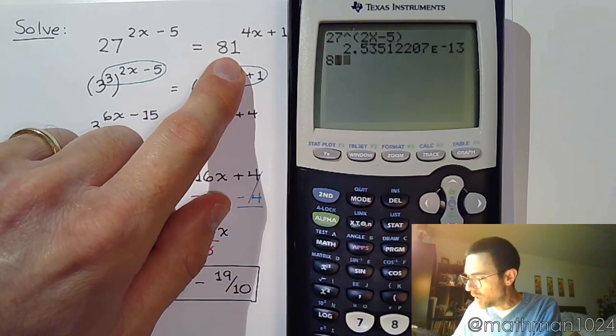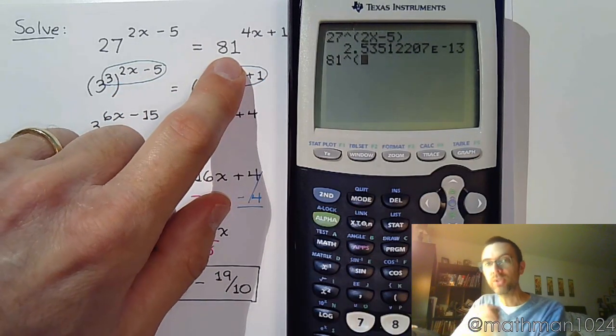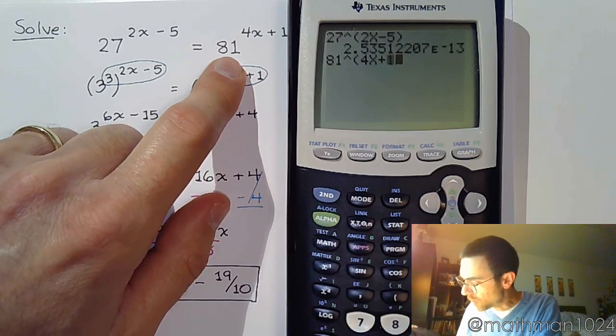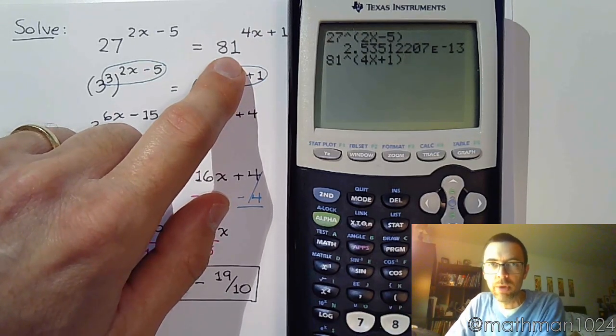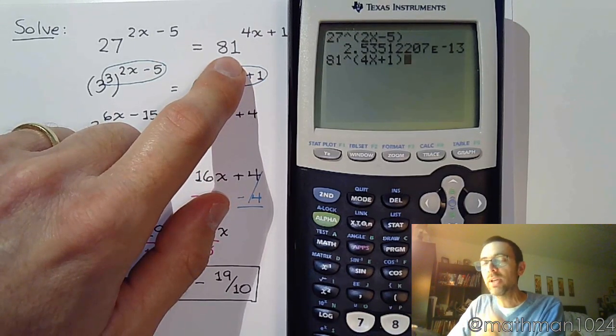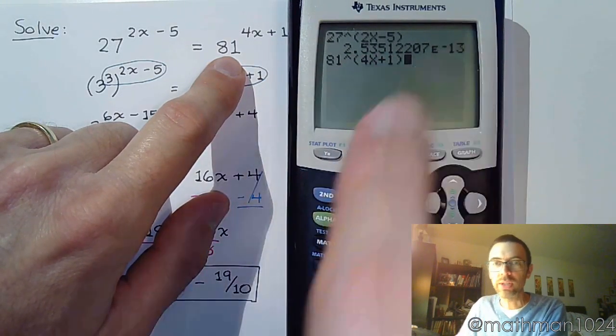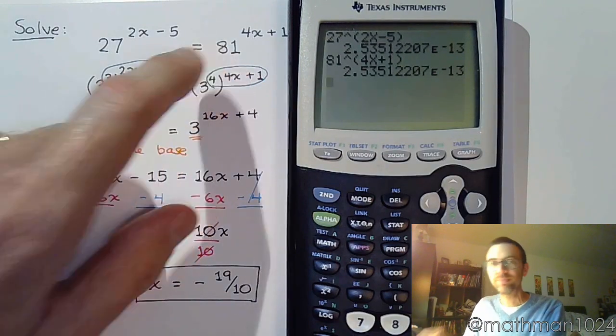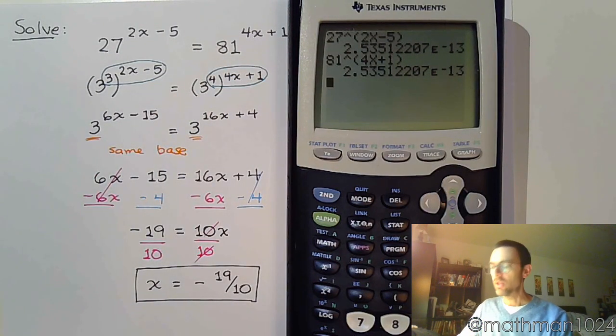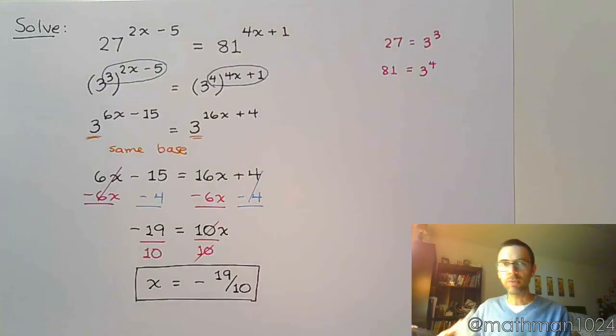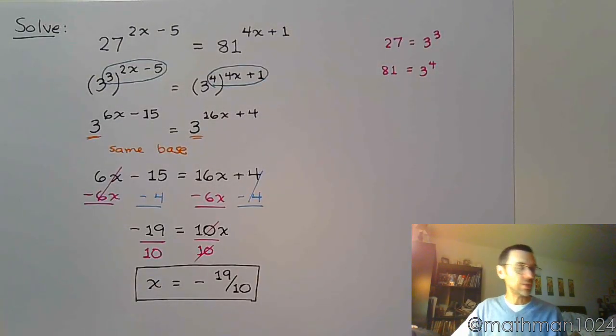Let's go to the other side here, 81 raised to the parentheses again because you have that group that you're trying to plug in, 4x plus 1. Now, if the x value that we came up with, the negative 1.9, if that is our solution, when I hit enter, I should get the same crazy-looking decimal that I had above. And I do. So, that's just verification that our answer here is correct. A nice, easy way to check your work.